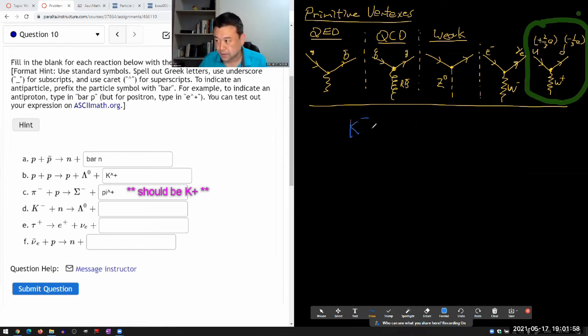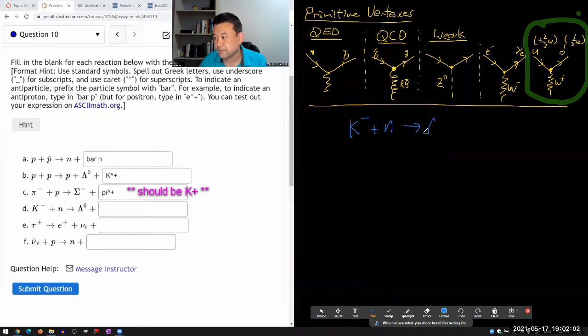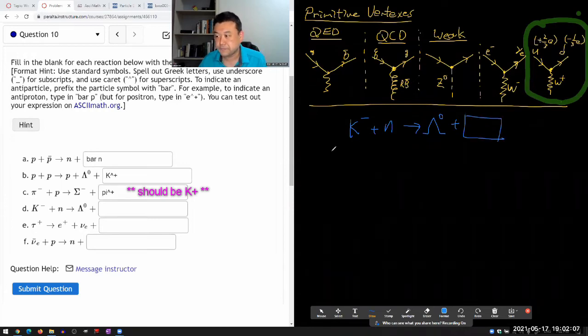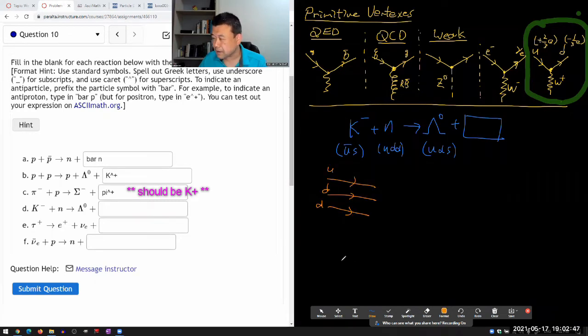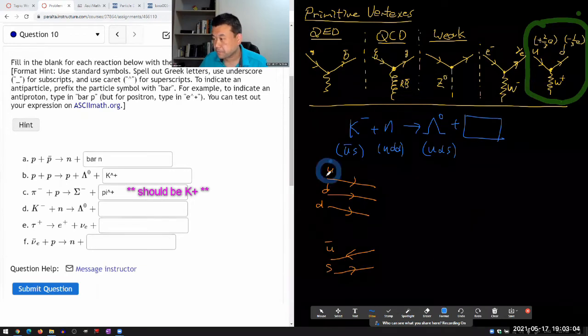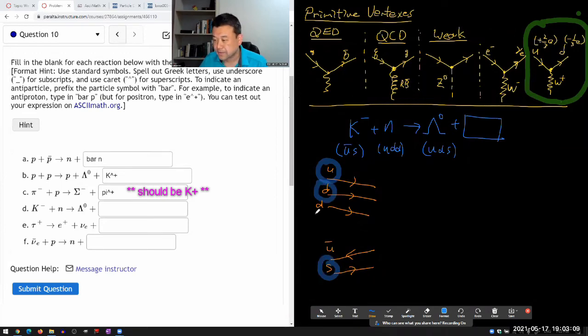I have K meson plus neutron going into lambda baryon plus something. I think I'm starting to remember all the quark contents. The negative K-on has quark content of anti-up and strange. Neutron has up, down, and down. The neutral lambda has up, down, and strange plus whatever. Let me draw them. I'll draw neutron first: up, down, and down. The negative K-on has anti-up and strange. In the outgoing side, I need up, down, and a strange quark. I think basically this down quark and this strange quark can swap positions.